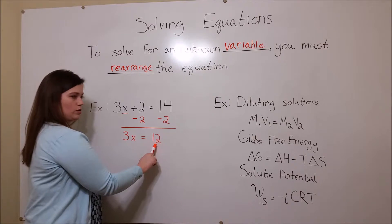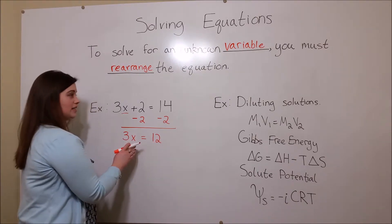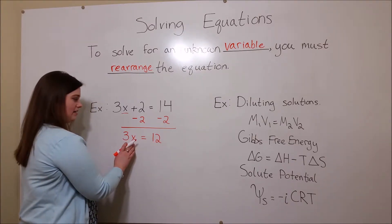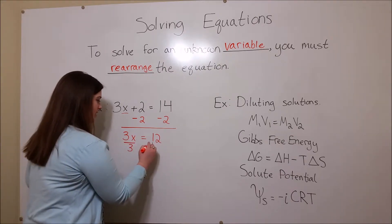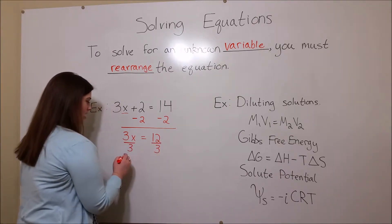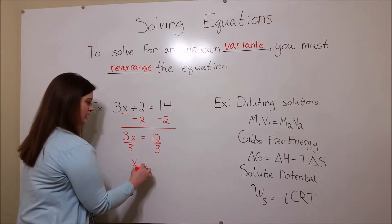Then to continue isolating that unknown variable, we'll divide both sides by 3. This gives us x equals 4.